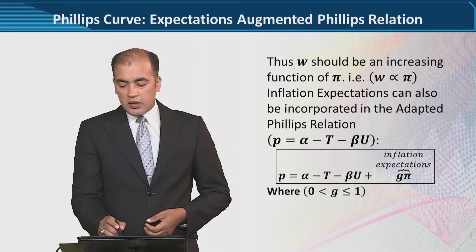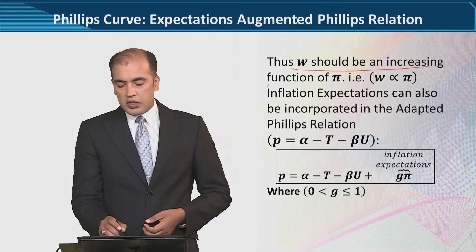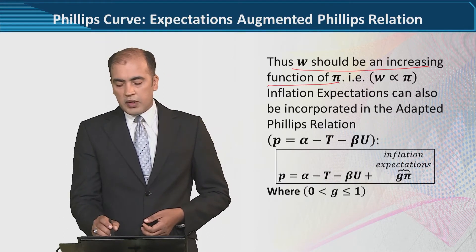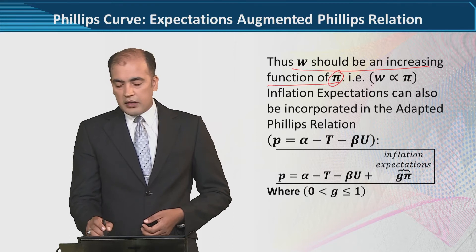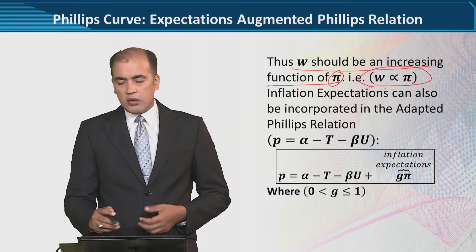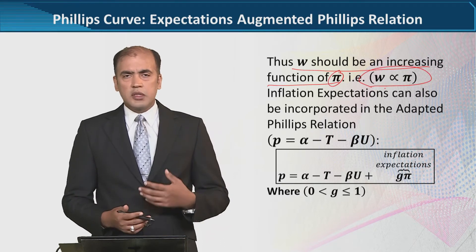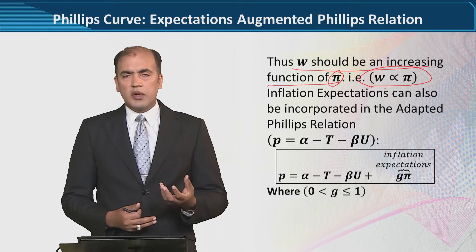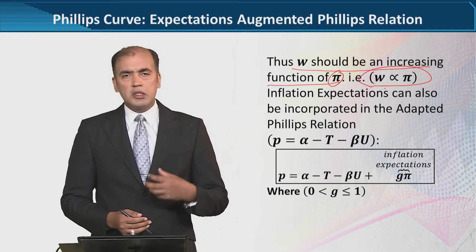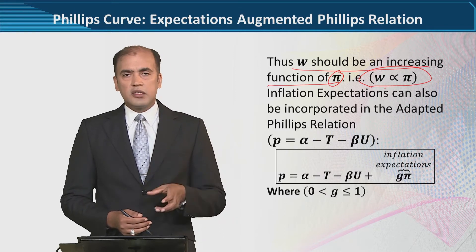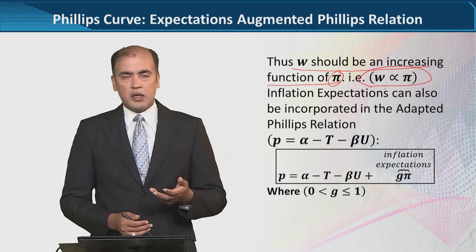So we will incorporate that in our money-wage-demands relationship. W should be an increasing function of pi — there is a positive relationship between the two. The more inflation labor expects, the more wages they will demand and push for an increase in wages.